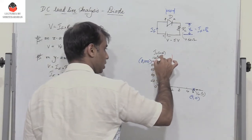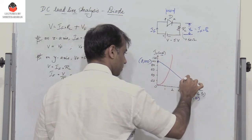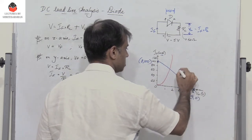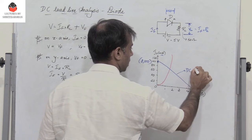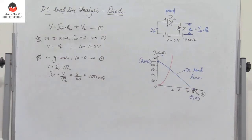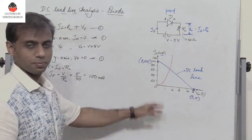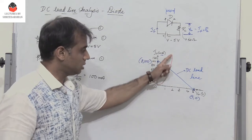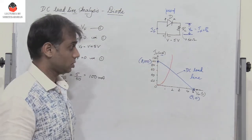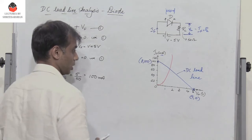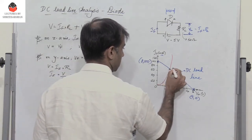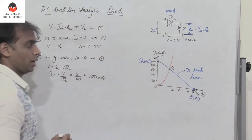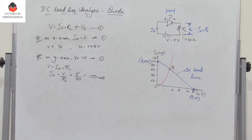Joining these two points gives the DC load line, which is a straight line drawn on the VI characteristics of the diode. The DC load line intersects the forward characteristics of the diode at one point, and this point is referred to as the Q point or the quiescent point.